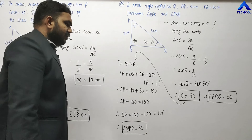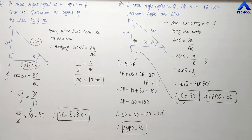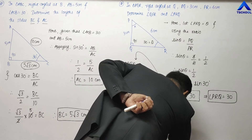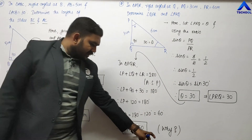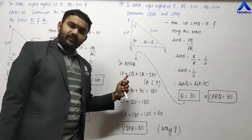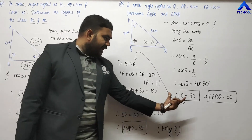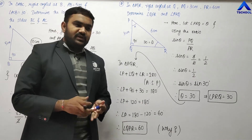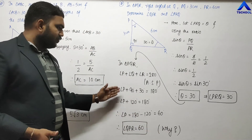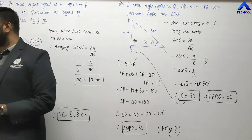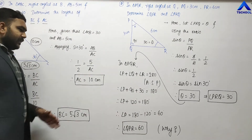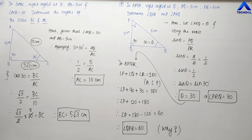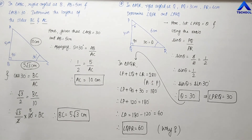In your textbook, they have directly written that angle PRQ = 30°, therefore angle QPR = 60°, and added a 'why?' The answer to that 'why' is the angle sum property: in triangle PQR, angle P + angle Q + angle R = 180 degrees. Replacing the values and simplifying, we get angle QPR equals 60 degrees.